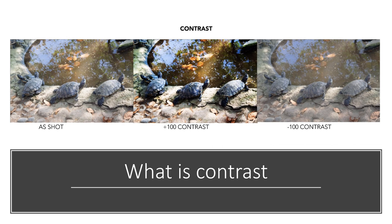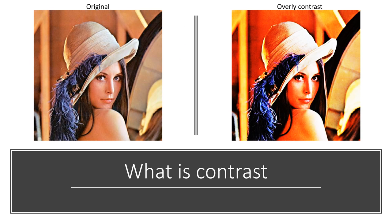Contrast is the difference in luminance or color that makes an object in an image distinguishable. Looking at the image, we may feel that more contrast is better, but here we see an example of overdoing the contrast correction. The original Lena looks a lot better than the overly contrasted Lena.